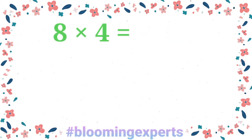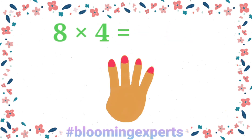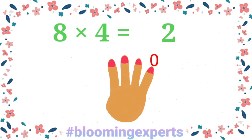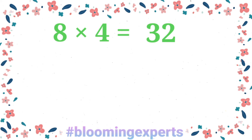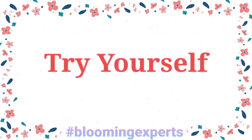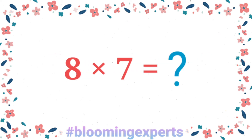Let's do it faster. 8 times 4: counting the ones digits — 8, 6, 4, 2 — so 2 is the ones digit. Counting the tens digits — 0, 1, 2, 3 — so 3 is the tens digit, giving us 32. Now try it yourself! I'll give you around 20 seconds before I solve it with you. 8 times 7.